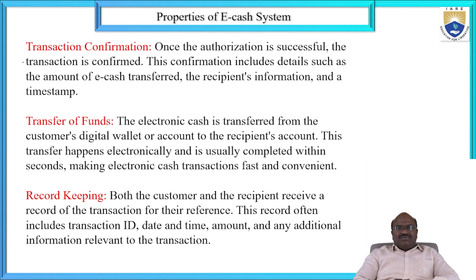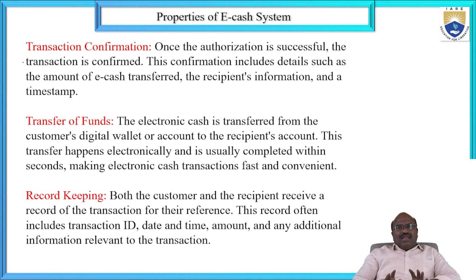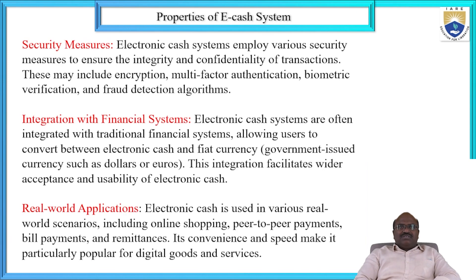Both customers and recipients receive records of the transaction for their reference. This record often includes the transaction ID, date and time, the amount, and any additional information relevant to the transaction. Record keeping — storing of previous and present information — is also one of the important properties of the e-cash systems. The electronic cash system employs various security measures to ensure integrity and continuity, including encryption, multi-factor authentication, biometric verification, and fraud detection.